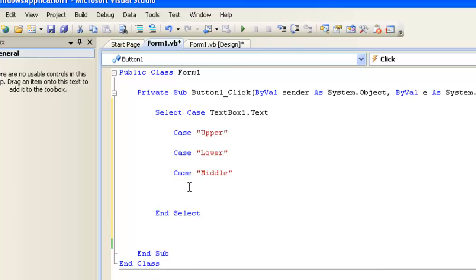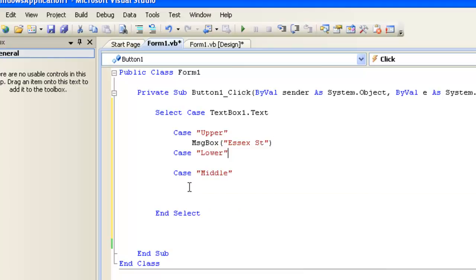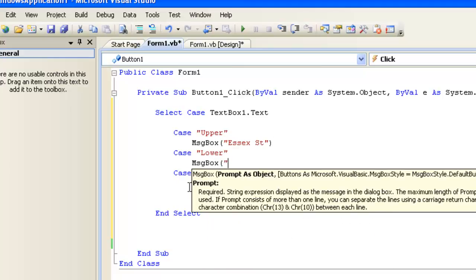And between the cases is where the code goes. So if they do enter upper, we want to send them a message box that tells them what street the upper school is on, which is Essex Street. And if the lower school is entered, then we provide them with the name of the lower school, which is the street that it's on, which is Webster Avenue.